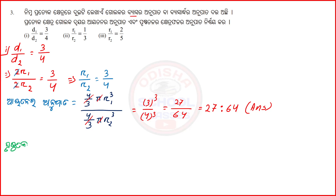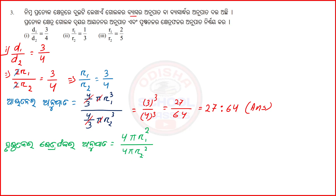Surface area and the formula from the previous class: 4πr². The surface area formula is 4πr², which is equal to d, so 4πr1² is equal to 4πr2².